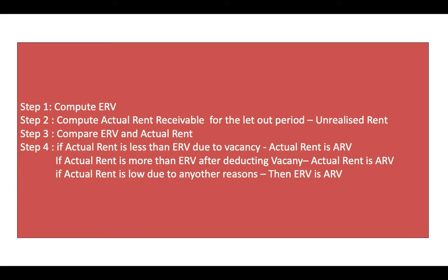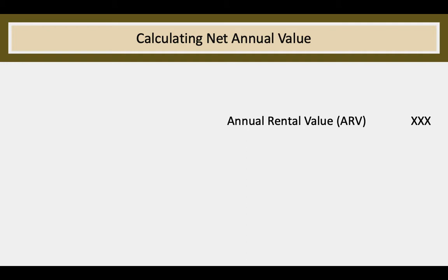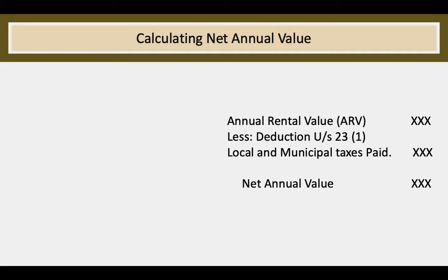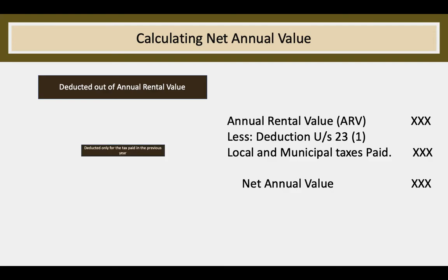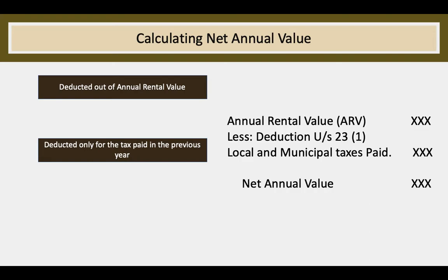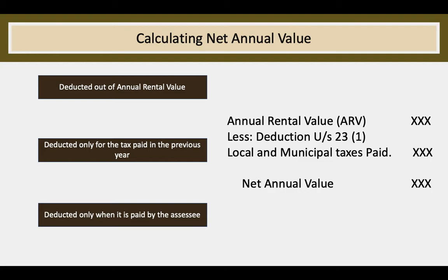Step 3, compare expected rental value and actual rent. Step 4: if actual rent is less than expected rental value due to vacancy, then actual rent is the annual rental value. If actual rent is more than expected rental value after deducting vacancy, then actual rent is the annual rental value. If actual rent is low due to any other reason, then expected rental value is the annual rental value. To calculate net annual value: take annual rental value and deduct local and municipal taxes paid under Section 23(1). The balance is net annual value — deductible only for the amount paid during the previous year by the assessee, not by the tenant.